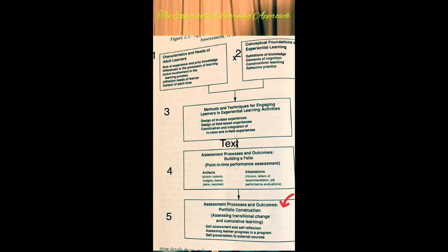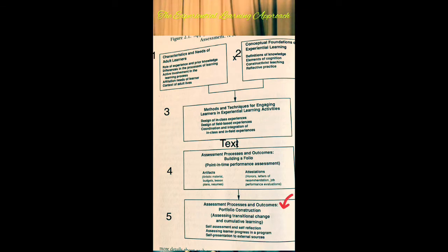Box five covers assessment processes and outcomes: portfolio construction, assessing transitional change, and cumulative learning. This includes self-assessment, self-reflection, assessing learner progress in a program, and self-representation to external sources.